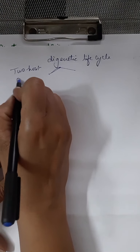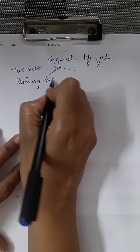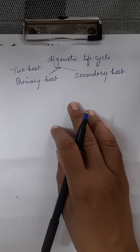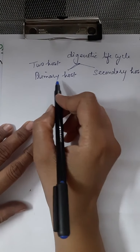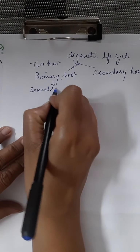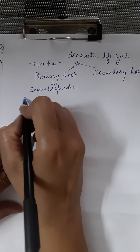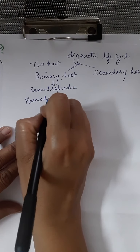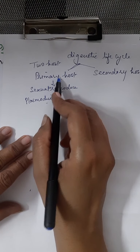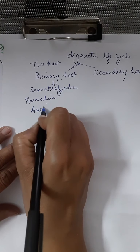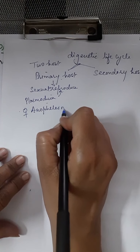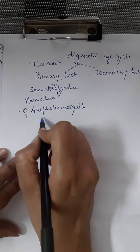It has two hosts — one is the primary host and one is the secondary host. The host in which sexual reproduction occurs is called the primary host. So the female Anopheles mosquito is the primary host.